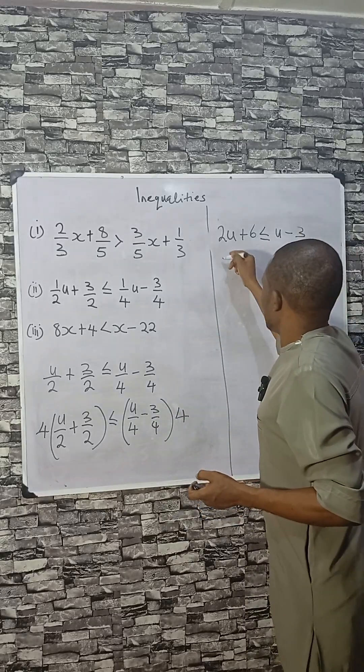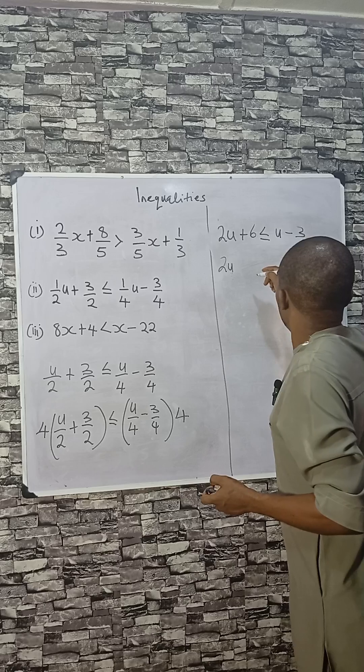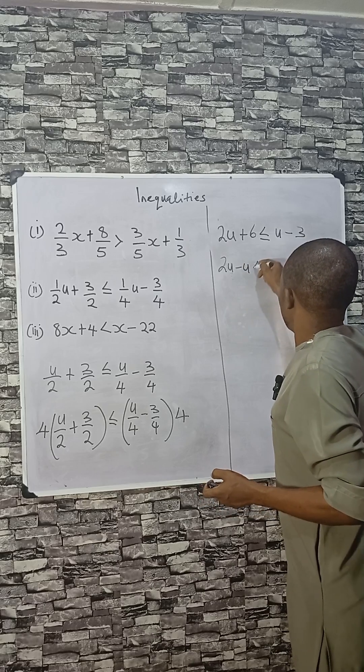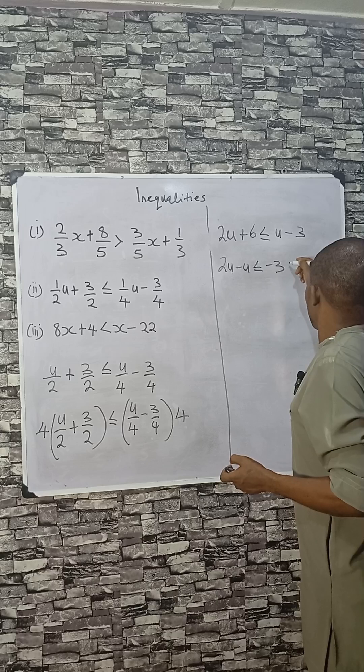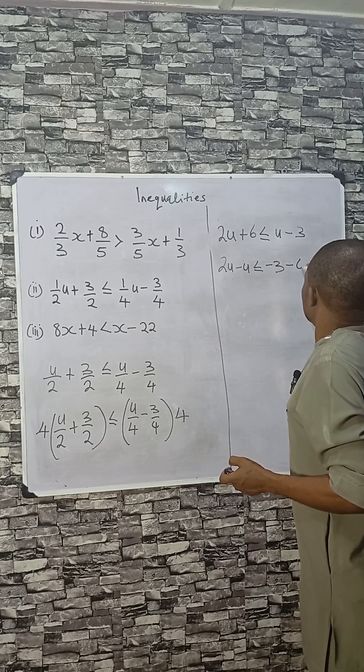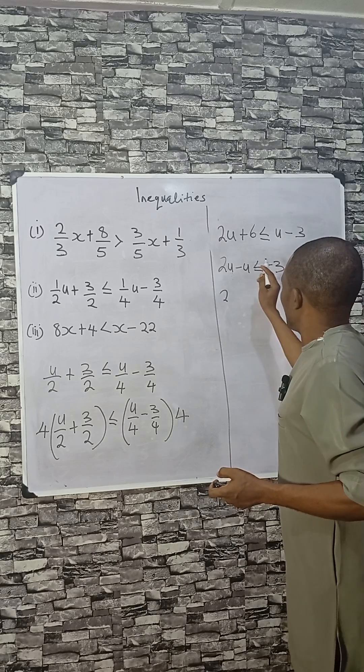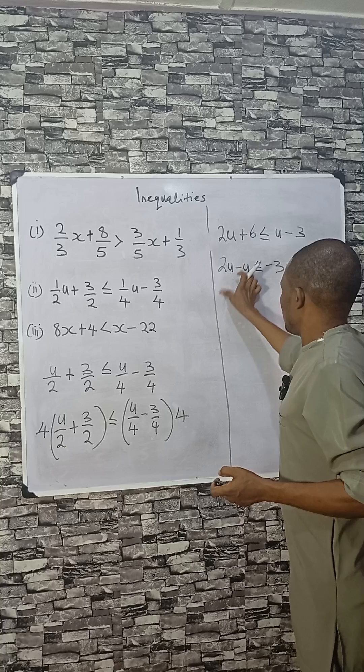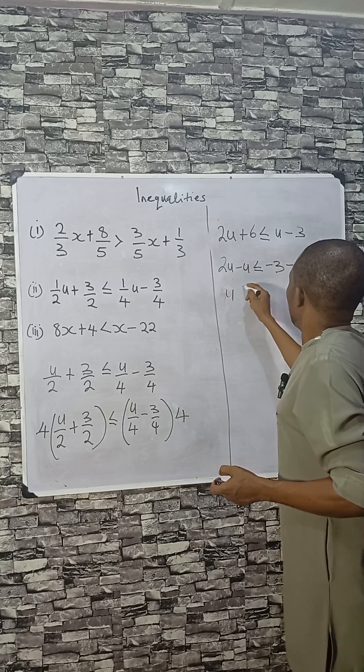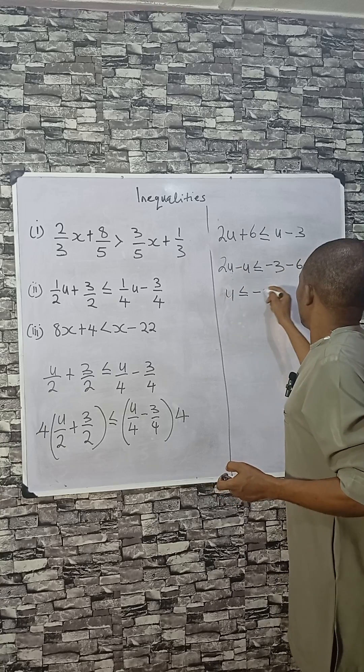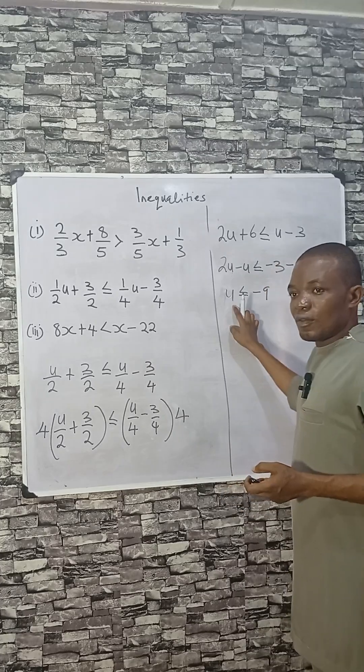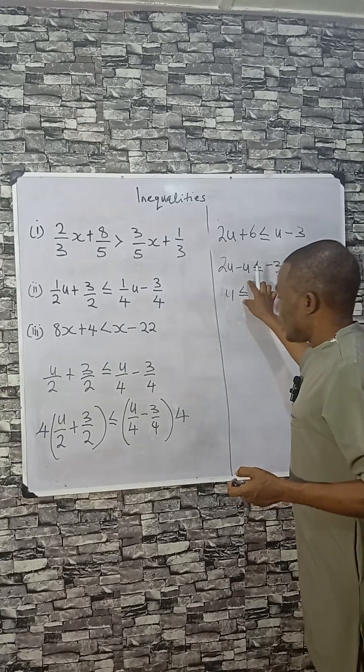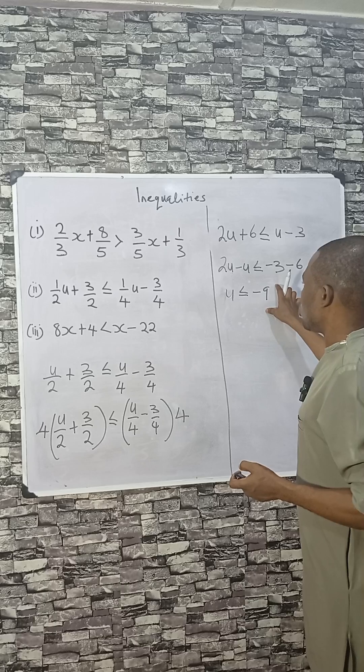Now combining like terms, 2u minus u less or equal to negative 3, this one will be minus 6. So 2u minus u, that is u less or equal to minus 9. So u is a set of numbers less or equal to 9.